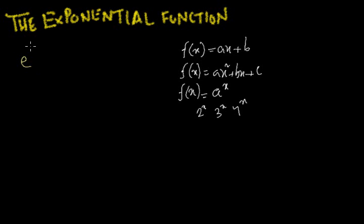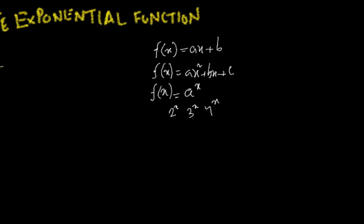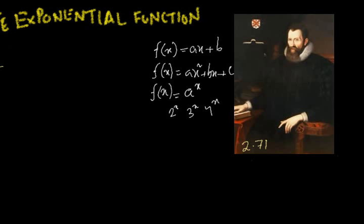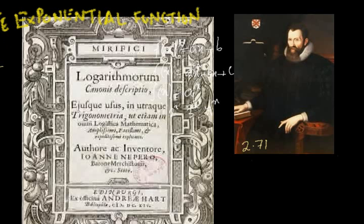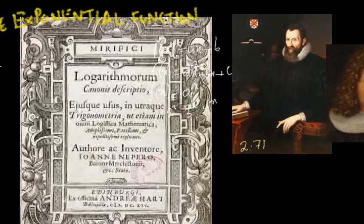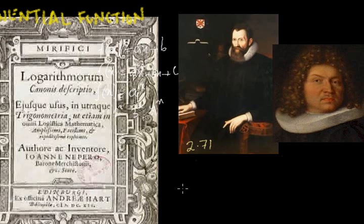The number e is the most famous number in the world. It was first referenced by John Napier, a brilliant man who published a book called the Miraculous Canon of Logarithm. In it, he invented logarithms — which are essentially the study of exponents. The book took him 20 years to write, and he worked with the value 2.71.